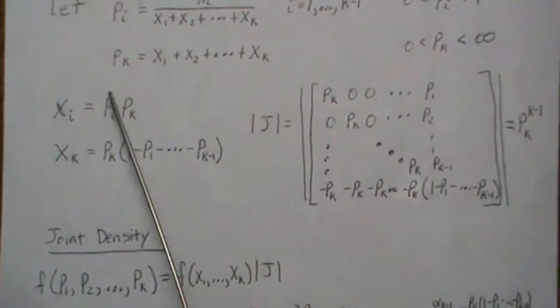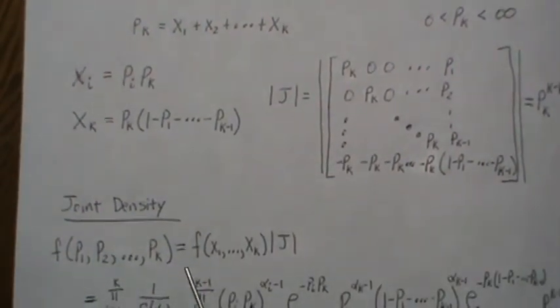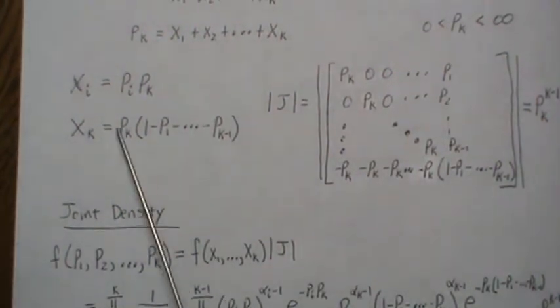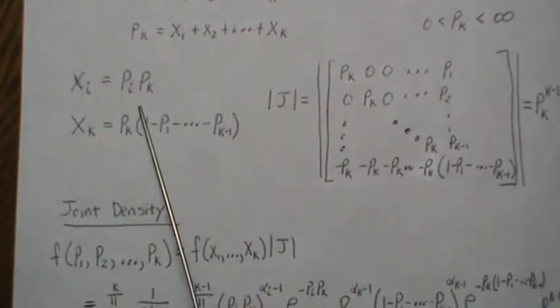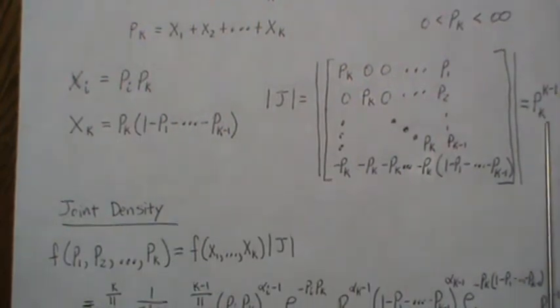Now to find the joint density of our P's, it's F of X, the original F of X, and we plug in X1 and X2 and X3 of the inverse transformation and then it's times the determinant of the Jacobian.